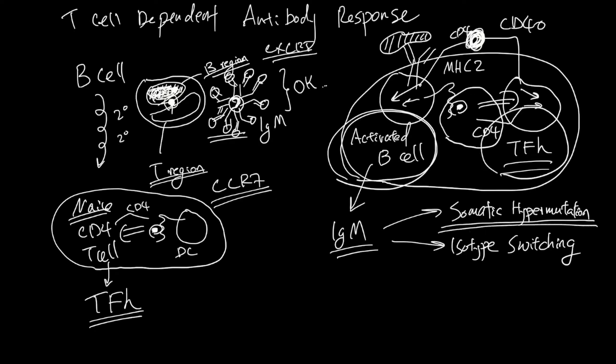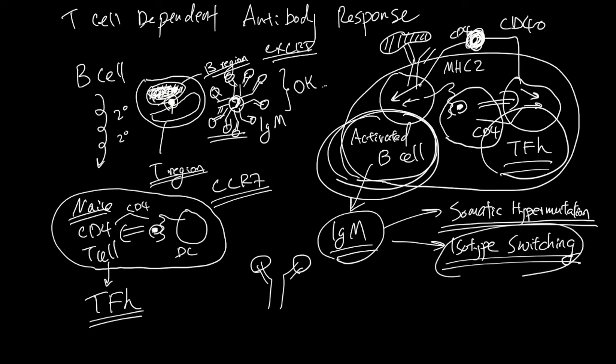Also, the reactivated B cell can now make more than IgM. Because of the somatic hypermutation, the variable region is better at binding to the antigen, and with isotype switching the antibody can have different types of Fc region.